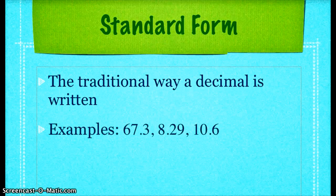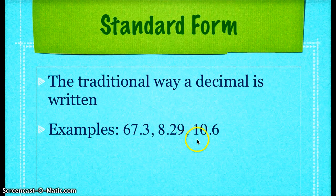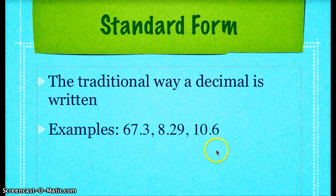Standard form is the traditional way a decimal is written. For example, 67 and 3 tenths, 8 and 29 hundredths, and 10 and 6 tenths are all examples of standard form. It's what you're used to.